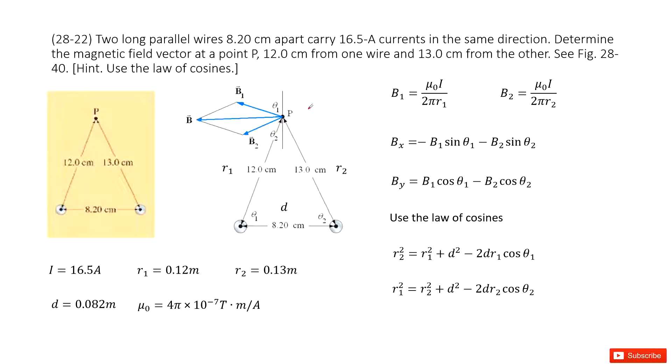So you can see we have two long parallel wires, right? And they are in the same direction. We need to find the magnetic field vectors at point P. And you can see the distance from the wire location to point P is given.